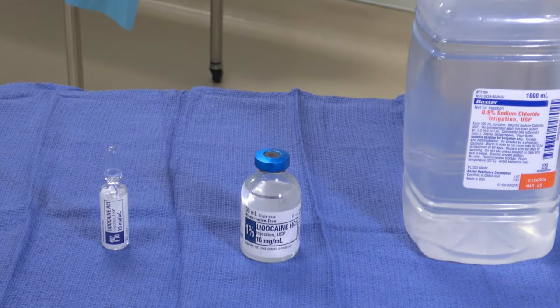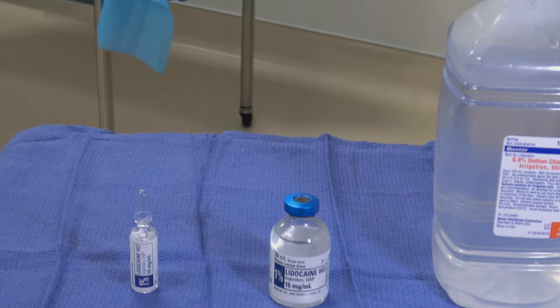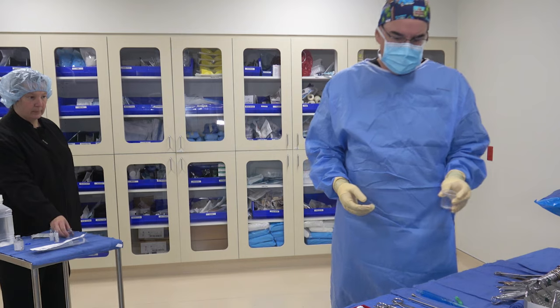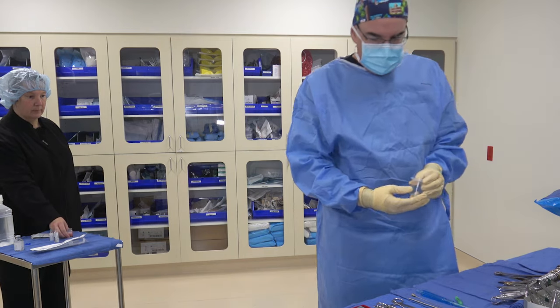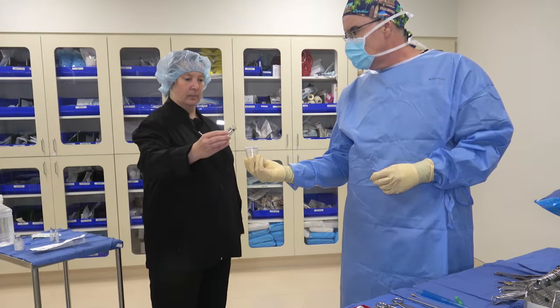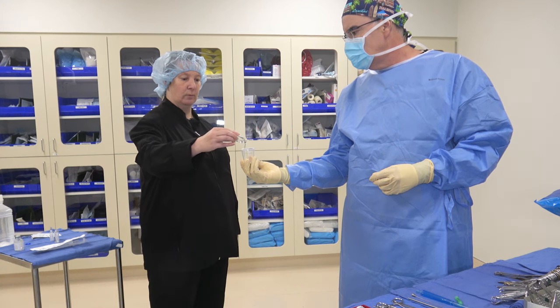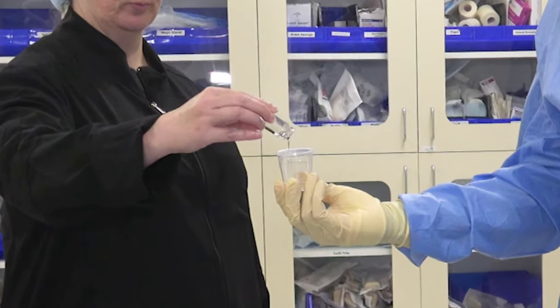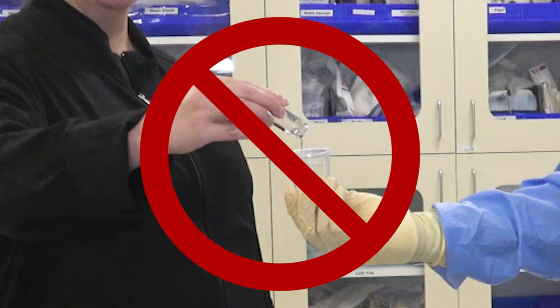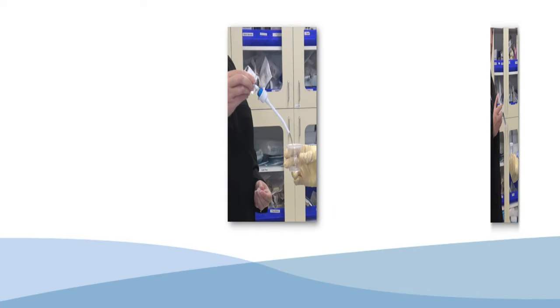Most medications come in a vial. Inside the vial is sterile and your field is sterile. Now in many clinical sites you'll see a transfer like this: the circulator opens the top of the vial and pours it into your medicine cup. But you see the problem — the outside of the vial is not sterile, and her hand is not sterile, and yet they are over or almost over your sterile field. This is not allowed.